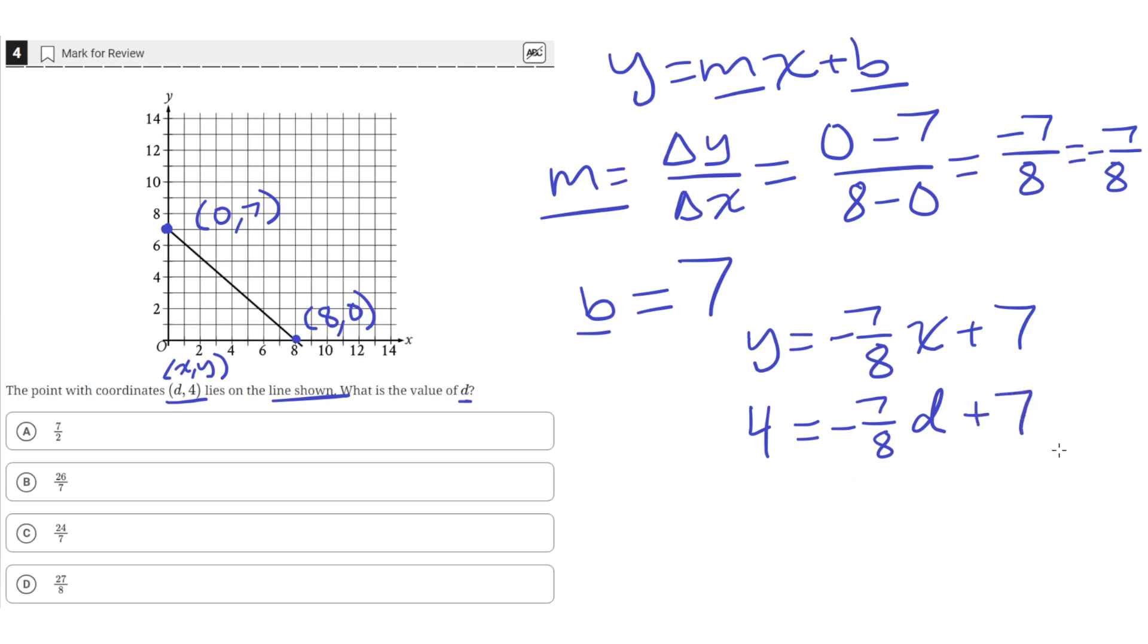Now let's just solve for d by isolating for d. So we subtract 7 from both sides, so we get a negative 3 on the left and just a negative 7 eighths d on the right. Then we divide both sides by negative 7 eighths. So this will become negative 3 times 8 over negative 7 equals d.